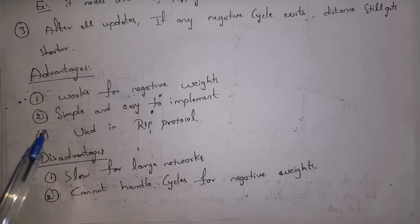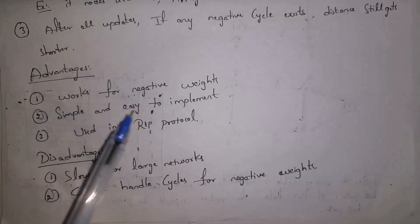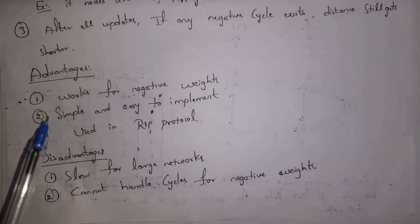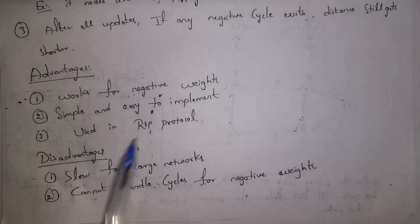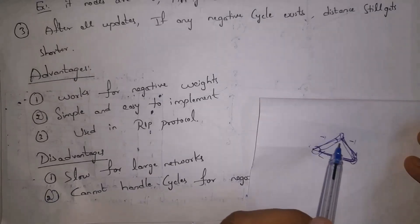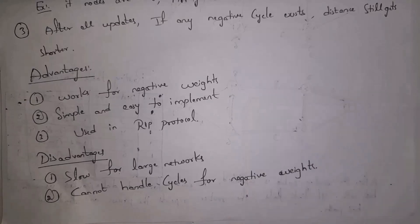Initially this algorithm will find better routes, and updates are done even if better routes are found later. Advantages of Bellman-Ford algorithm compared to Dijkstra's: it works for negative edges, and it is very simple and easy to implement. It is based on the Routing Information Protocol. A disadvantage is that applying Bellman-Ford for large networks is very slow, and if any negative edges form a cycle, Bellman-Ford algorithm cannot handle it.